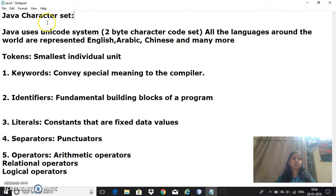Now we will see what all are there under Java character set. A token is the smallest individual unit, so anything you see in the program as a small statement or word, all these things are called tokens.